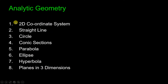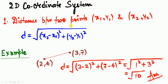We'll begin with the two-dimensional coordinate system. The first topic is the distance between two points (x1, y1) and (x2, y2). Suppose you have two points with those coordinates and you are asked to find the distance between them. Simply apply the formula: d equals the square root of (x2 minus x1) squared plus (y2 minus y1) squared.